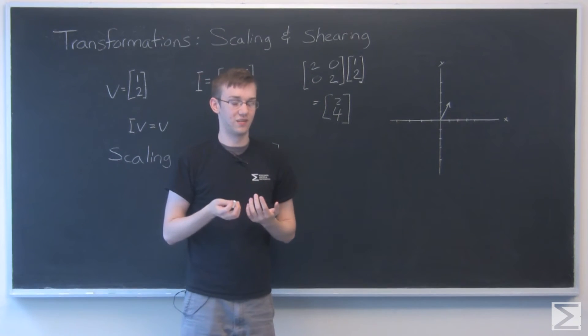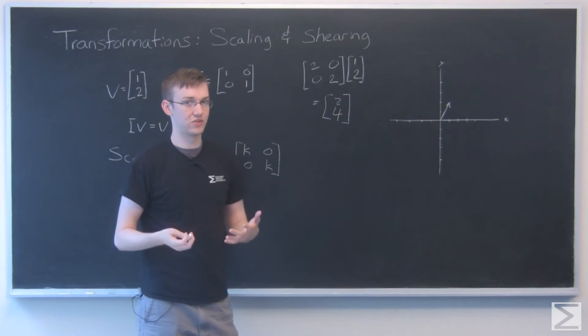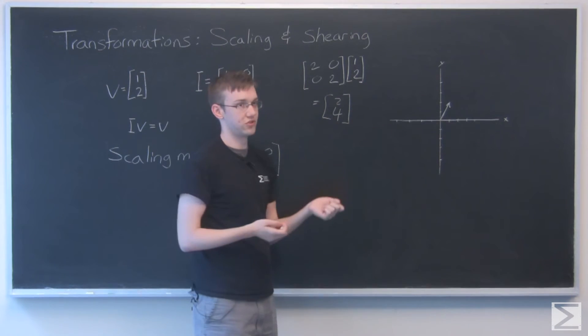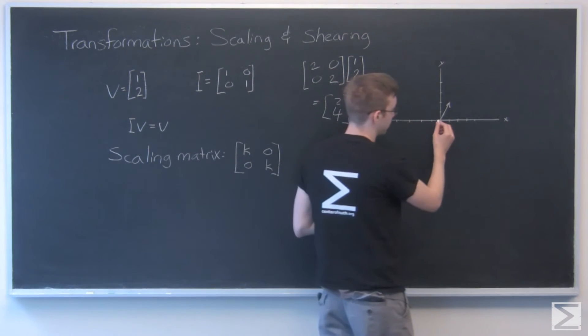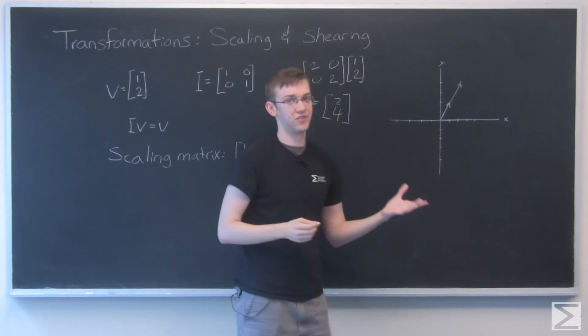But since we're talking transformations, this is the simplest example of what it looks like for a matrix to do that. So we're starting with that. So here we have 2, 4. And if we draw that out, we just go out 2 and up 4. And it's the same vector now, just bigger.